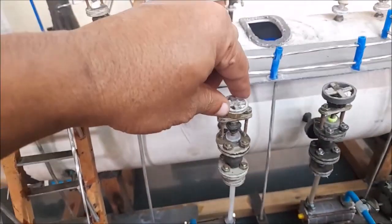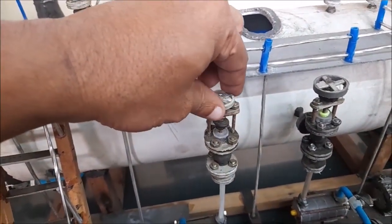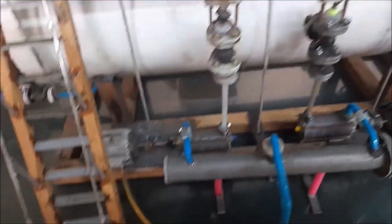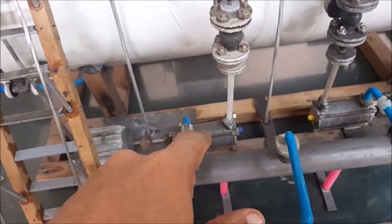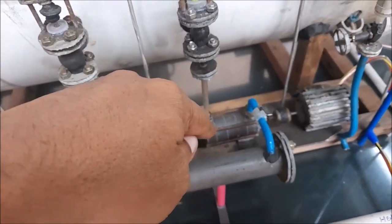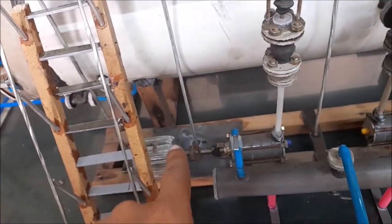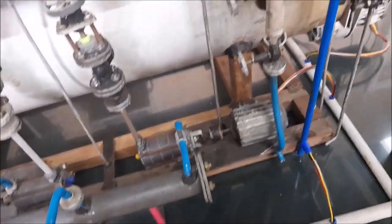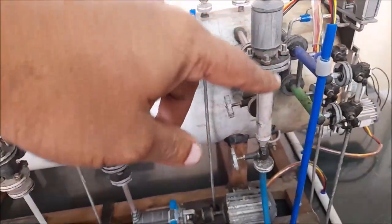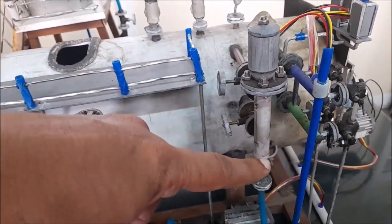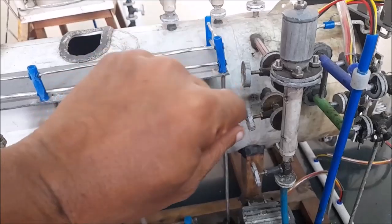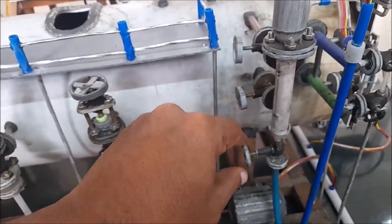This is the feed check valve of the boiler. This is also a feed check valve. This is a multistage pump, and this is also a multistage pump. This is a 5 HP motor, and this is also a 5 HP motor. This is the Mowbrie of the boiler. This is the steam valve and the water valve, and this is the drain valve.